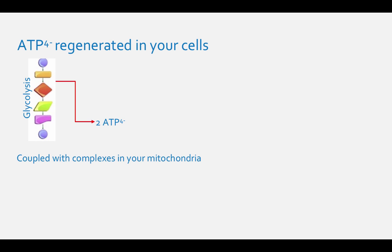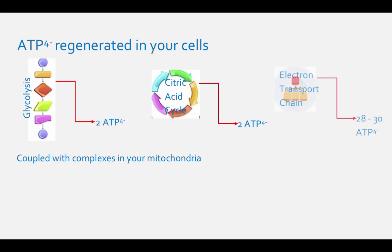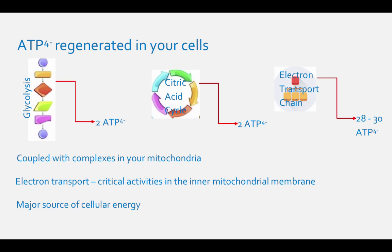Glycolysis, the citric acid cycle, and the electron transport chain also produce other energy containing molecules. Electrons from these molecules are then transferred to molecular oxygen, coupled to the formation of an additional 32 to 34 ATP molecules by the electron transport chain. Electron transport are critical activities of protein complexes in the inner mitochondrial membrane, which ultimately serve as the major source of cellular energy.